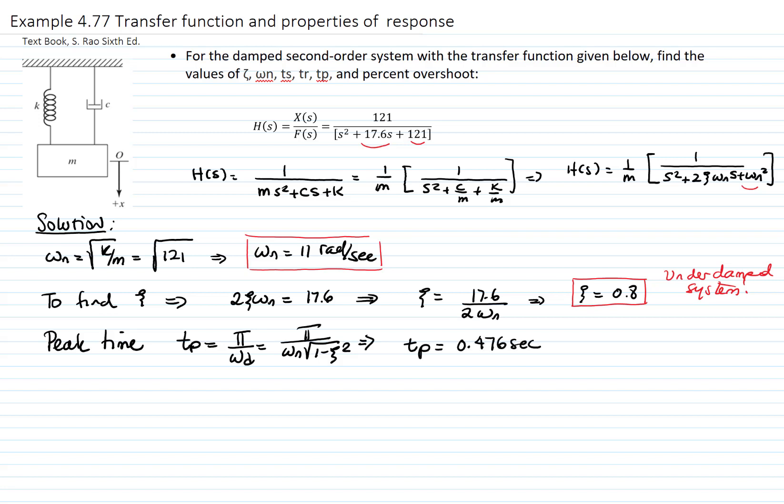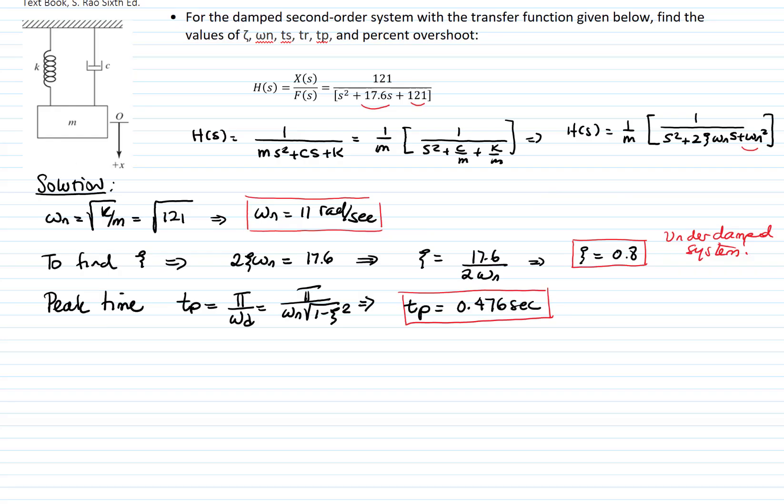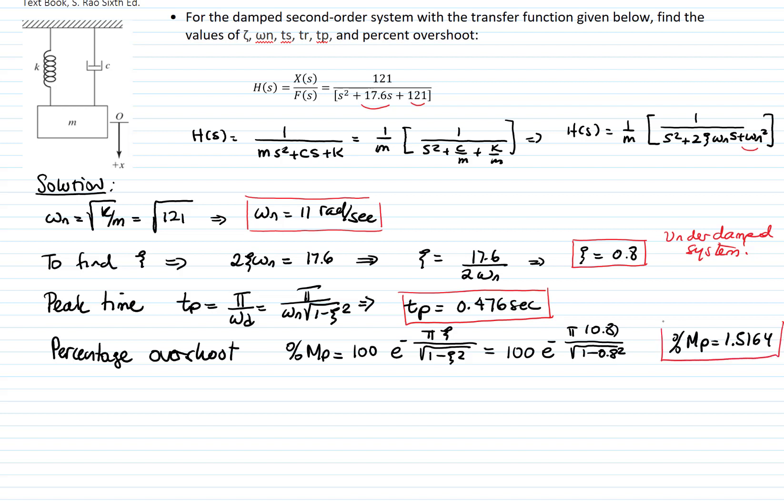We want to calculate also the percentage of overshoot. So that means how much does the response go beyond 1. Remember that the response will settle at 1, being the response over the static deflection produced by our step function. And that overshoot in percentage is defined as 100 exponential to the negative pi zeta over the square root of 1 minus zeta squared. And I plug in the values and get that the percentage of overshoot is 1.5164%. So the overshoot is very small for that great amount of damping.